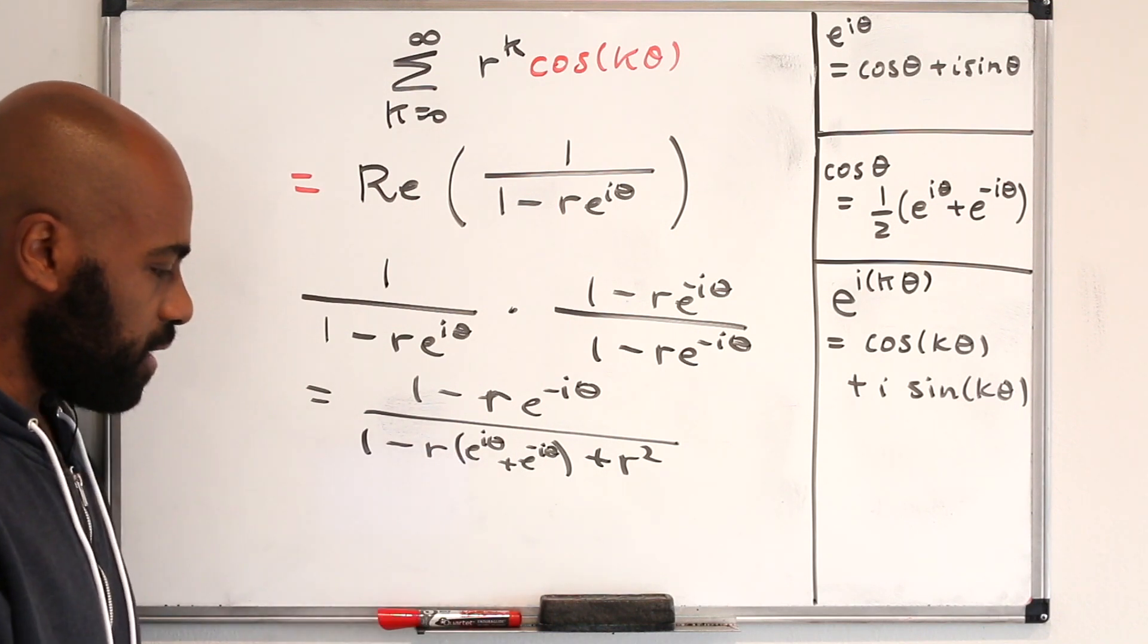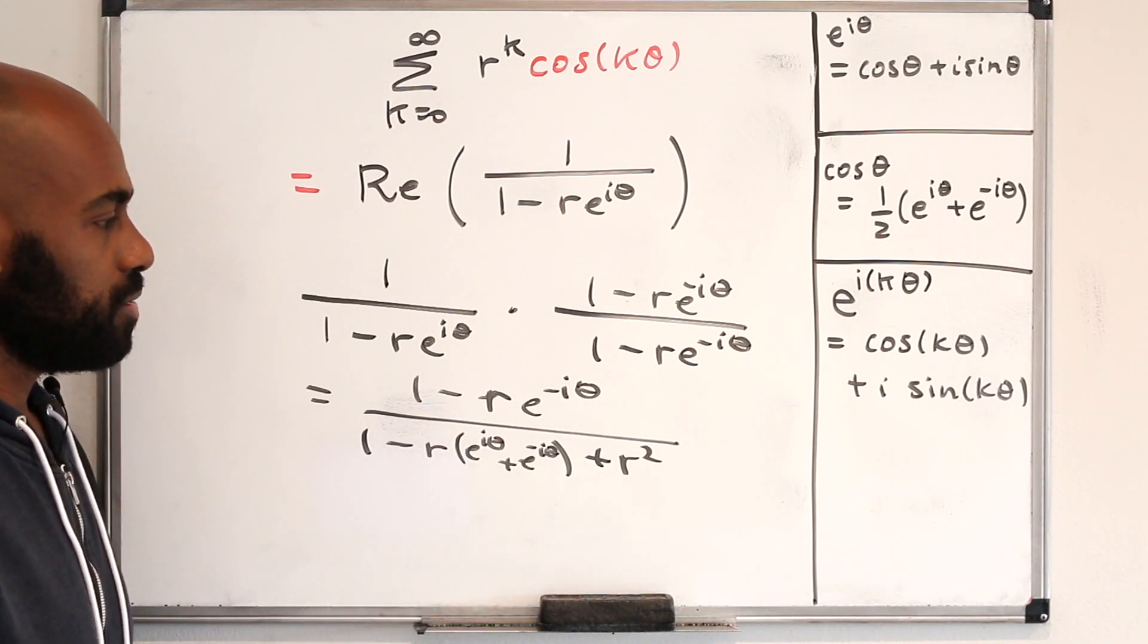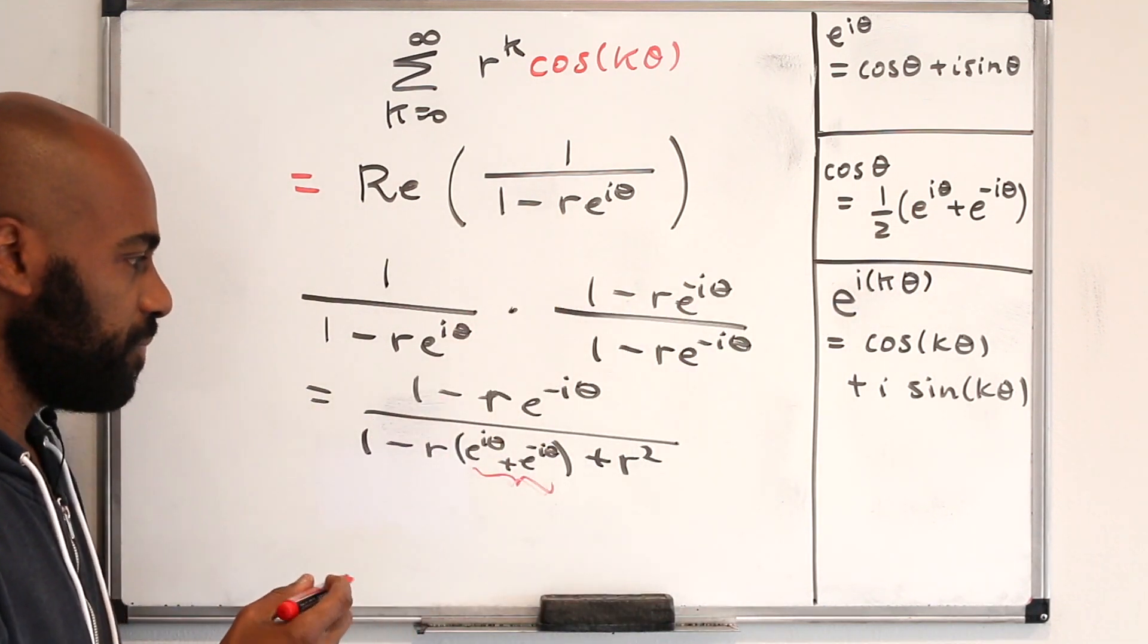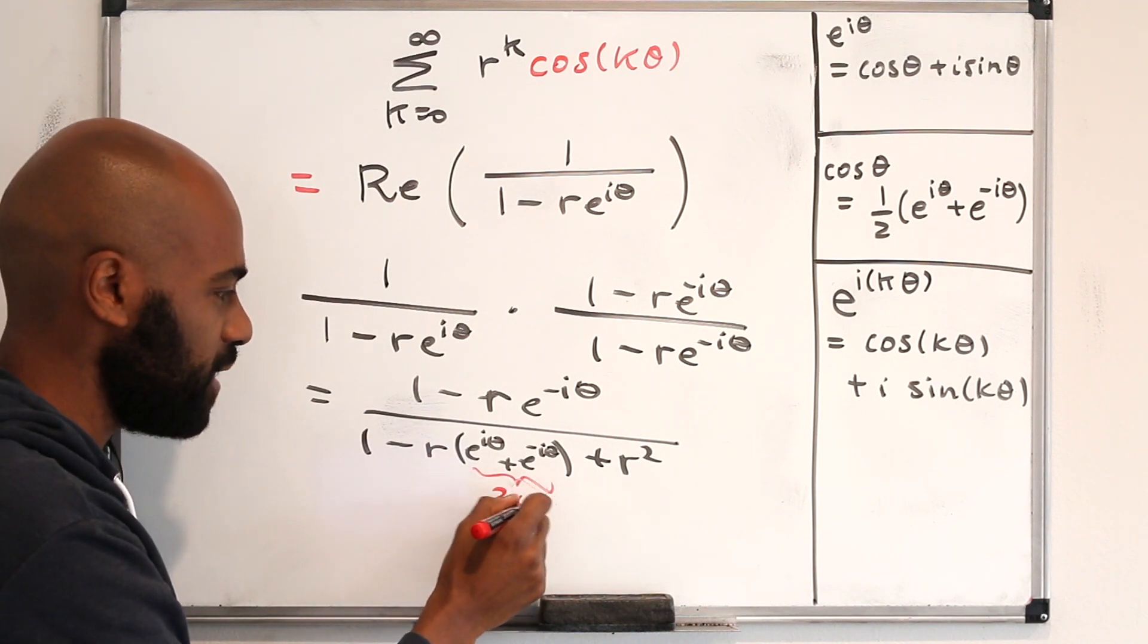Now, all right, this quantity here looks familiar. It looks very close to this with the factor of 2 missing. So this thing actually is twice cos theta.